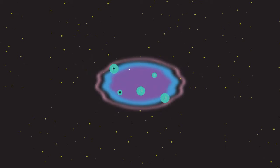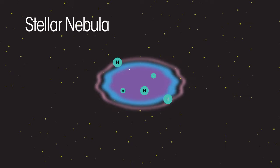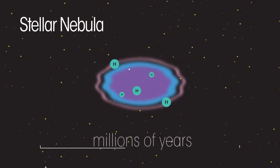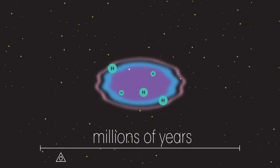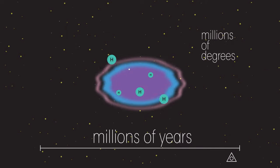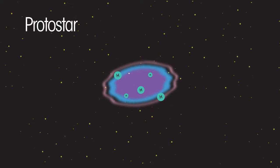All stars initially form from a cloud of dust and hydrogen gas. This cloud is called a stellar nebula. Gravity over millions of years causes the dust and gas to spiral together. The particles move faster and eventually reach temperatures of millions of degrees to form a protostar.